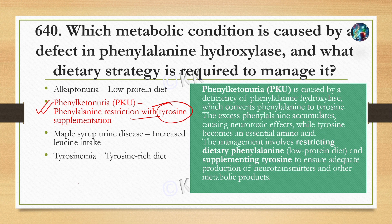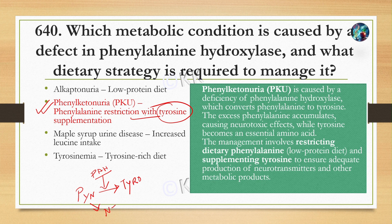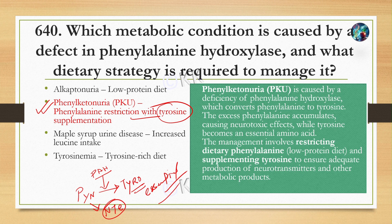In phenylketonuria, phenylalanine cannot be converted to tyrosine, causing neurotoxic effects due to accumulation. Phenylalanine is an essential amino acid not produced in our body. Because of this enzyme deficiency, tyrosine also cannot be produced. Therefore, we need to provide tyrosine supplementation. Management involves a phenylalanine-restricted diet with tyrosine supplementation to ensure adequate production of neurotransmitters and other metabolic products.